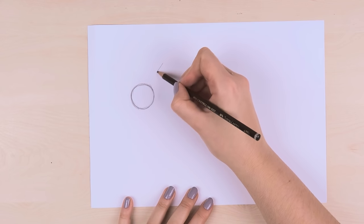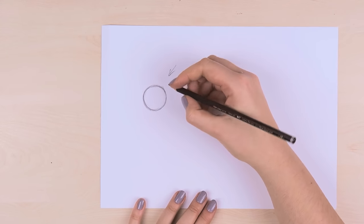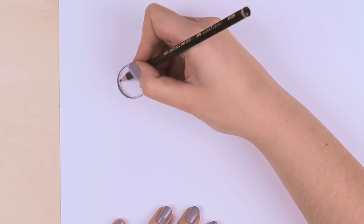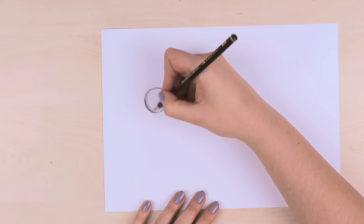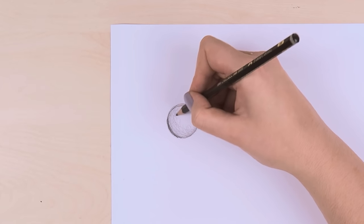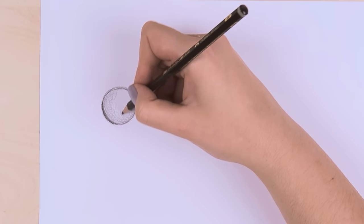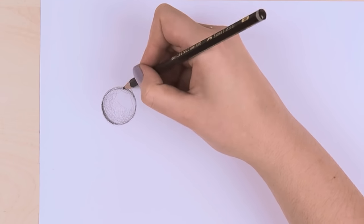Now, before you start shading, it's important to find the light source as this is going to decide where you have to add the shadows and the highlights. Where does the light come from? As I mentioned in the beginning, it's important to pay attention to the overall shape of the object. This is also important when it comes to shading it.